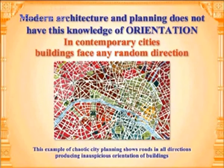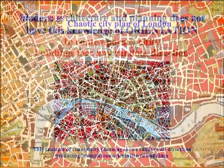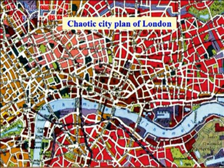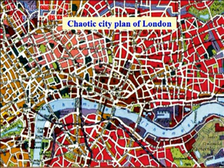We can take the example of the chaotic city planning of London. London is bisected by the Thames River, and all the roads have grown in a criss-cross pattern over hundreds of years. The main financial areas — the Bank of England and the Royal Stock Exchange — are inauspiciously placed with this big river to the south, and that is having a destructive influence on the financial market of London, which used to be the largest financial market in the world.